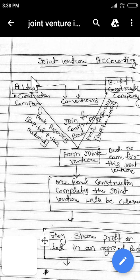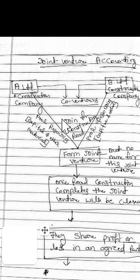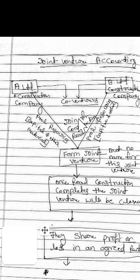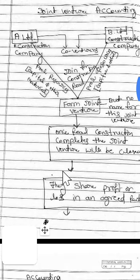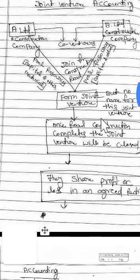A Limited and B Limited join together for constructing a road. Constructing road is the venture. They join together and pool resources including capital and other materials for constructing the road. This is called a joint venture. There is no name for this joint venture, so it is called a temporary partnership firm, because once the road construction completes, the joint venture will be closed. They share profit or losses in an agreed ratio.